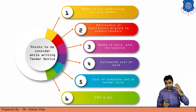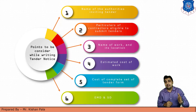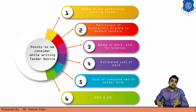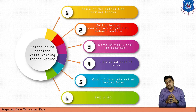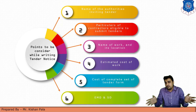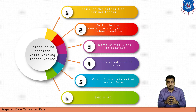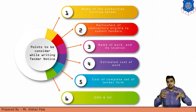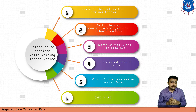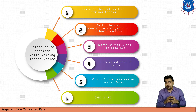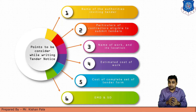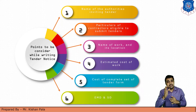Next is the cost of the set of tender form. To participate in the bidding process, all contractors must pay a particular amount known as the cost of the complete set of the tender form. It is not refundable and is generally 2,000 to 5,000 rupees. Next is EMD and SD — earnest money deposit is generally 1 to 2 percent of the total cost of the project, and security deposit is generally about 10 percent of the total cost.